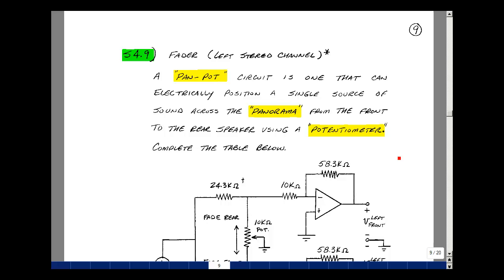The circuit shown below here is called a pan-pot circuit. It can electrically position a single source of sound across the panorama from a front set of speakers to a rear set of speakers using a potentiometer. It's also called a fader circuit.